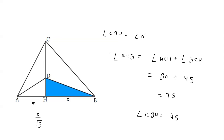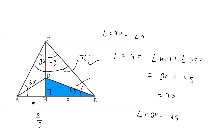This angle is 90 degrees, this angle we calculated as 45, this is 30 and this is 45, so the whole angle at C is 75 degrees. And since the sum of angles in the triangle is 180, with angle C = 75 and angle B = 45, the remaining angle A comes out as 60 degrees.